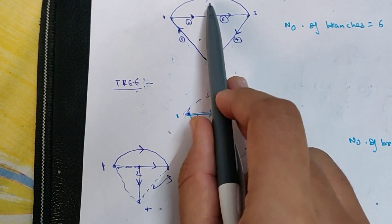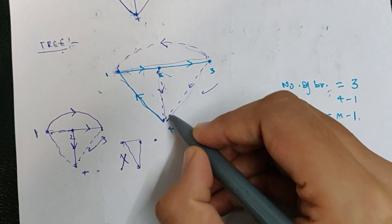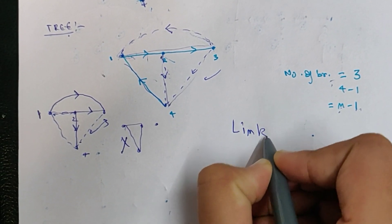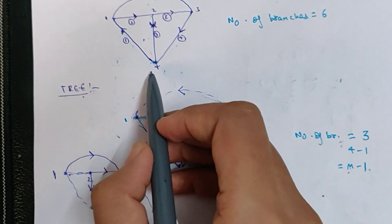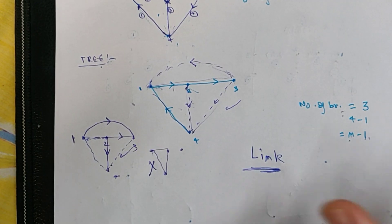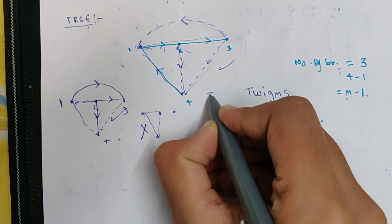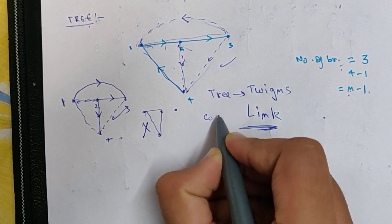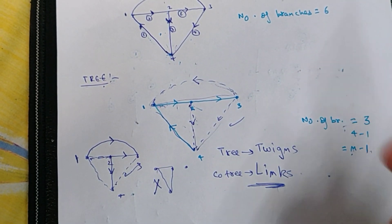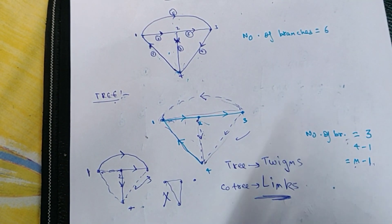The number of branches in the tree equals n minus one. The branches of the co-tree are called links. The branches of the network graph are simply called branches, and the branches of the tree are called twigs. So to summarize: for a tree it is called twigs, and for the co-tree it is called links. Thank you — you can watch the next video in this series to understand more about graph theory in network analysis and synthesis.